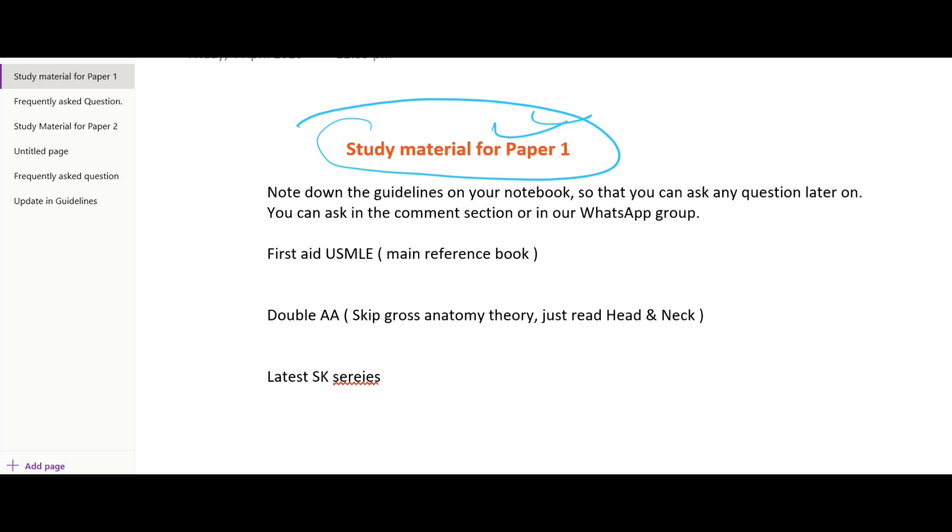The main source for Paper 1 is always First Aid USMLE book. This is the main reference book. But I don't recommend it to study from A to Z. I will discuss in detail what to study from it. But if you are studying the MCQs and you find any topic difficult, you should move to First Aid USMLE and study the topic from here.